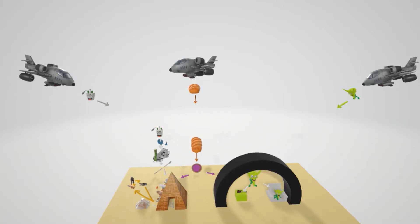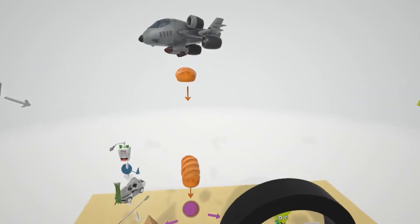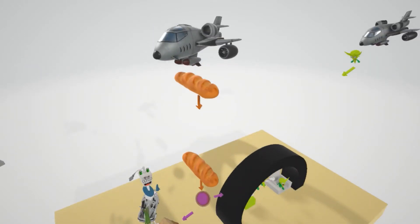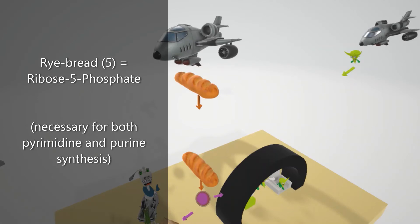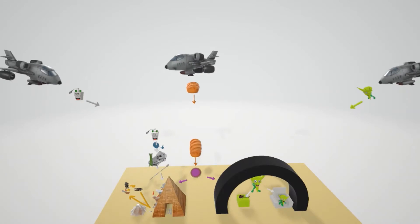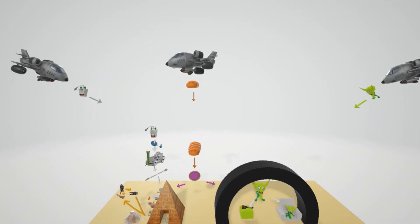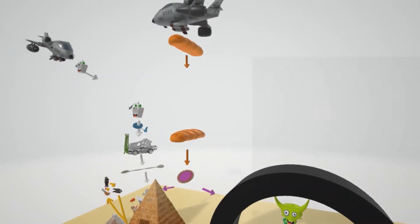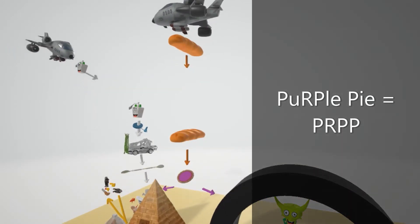This airplane in the middle is dropping rye bread — rye bread for ribose 5-phosphate. You can remember it's 5-phosphate because there are five different compartments of the bread. Ribose 5-phosphate is a precursor for both pyrimidine and purine de novo synthesis. The rye bread falls down and turns into this purple pie — purple pie for PRPP. PRPP is necessary for both pyrimidine and purine de novo synthesis.